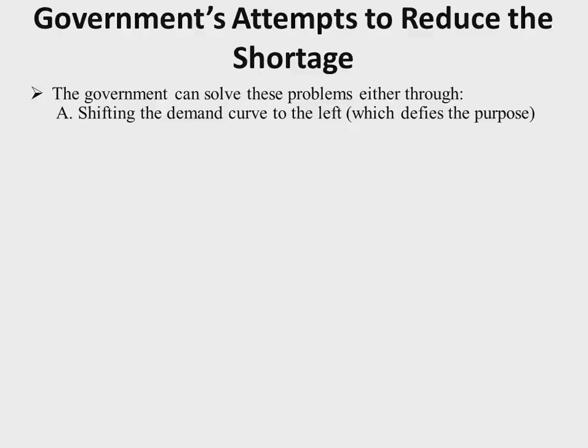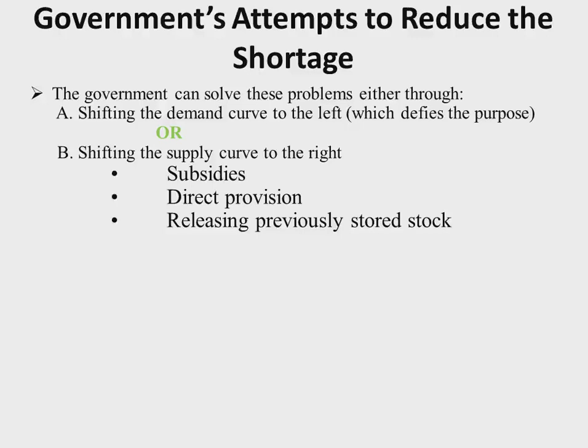The government may also shift the supply curve to the right by giving a subsidy or through direct provision — where the government actually supplies the commodities to the people. Alternatively, the government may release previously stocked items from warehouses, which shifts the supply curve downwards and to the right.